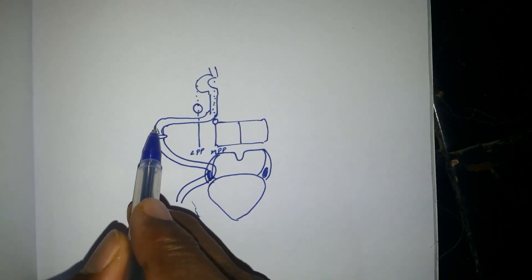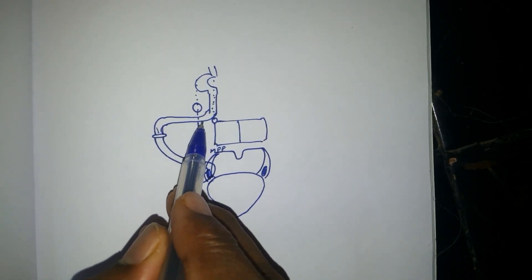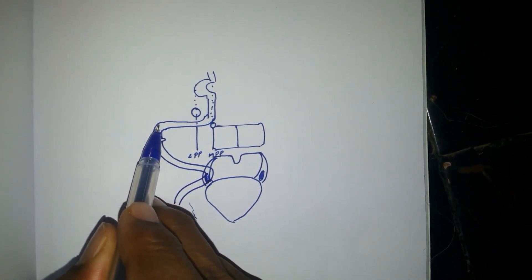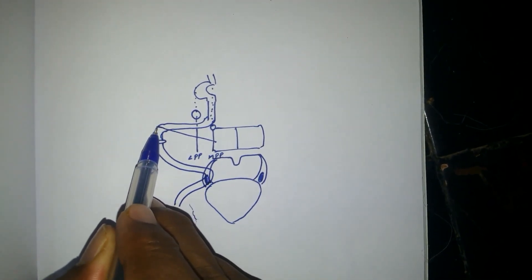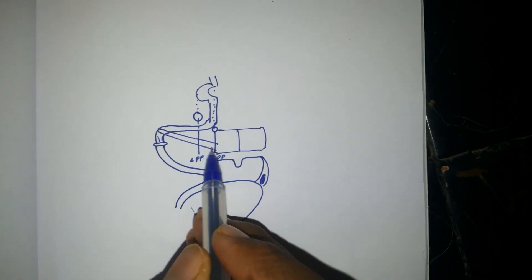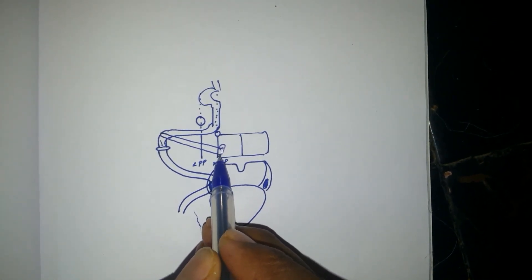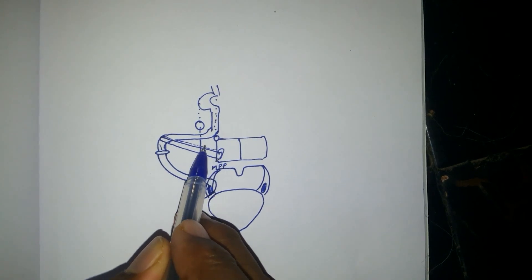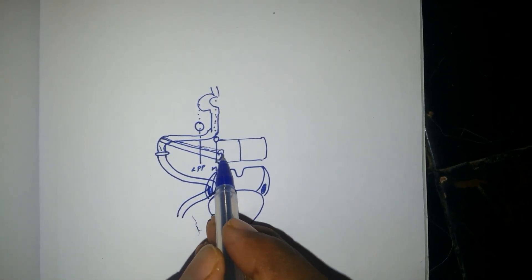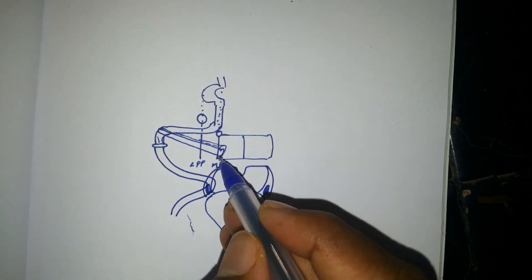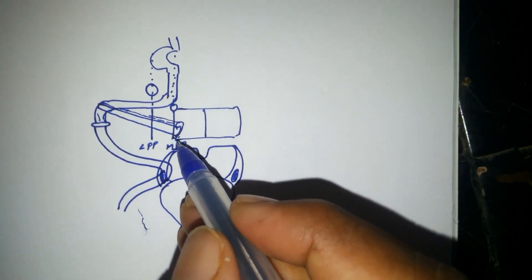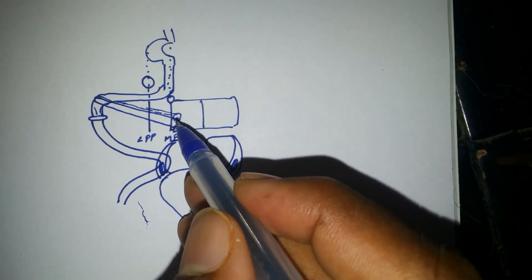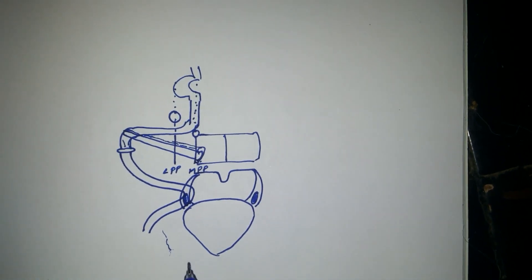From the junction of the vertical part of the carotid and the horizontal part of the carotid, the Eustachian tube starts. The Eustachian tube lies posterior to the medial pterygoid plate.